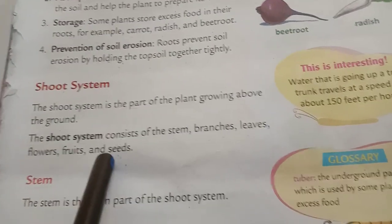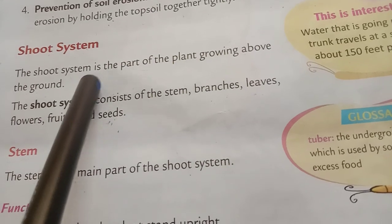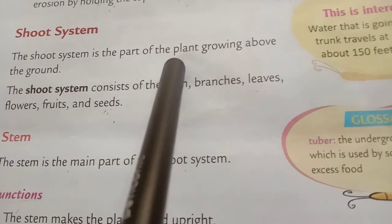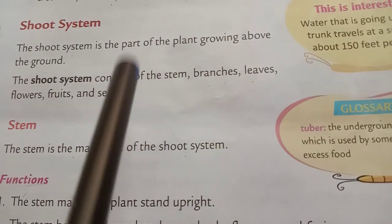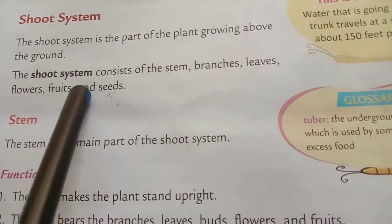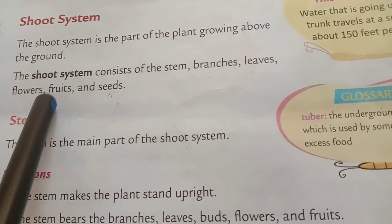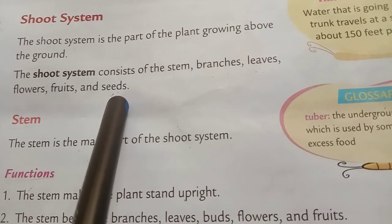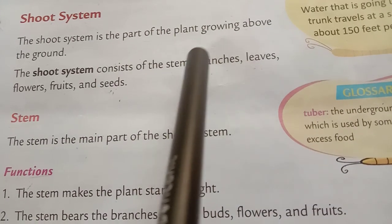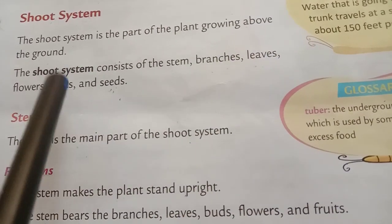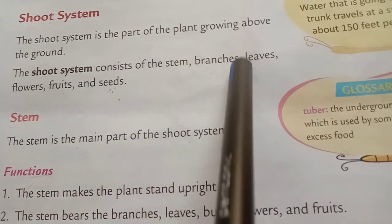Now the next is the shoot system. The shoot system is the part of the plant growing above the ground. The shoot system consists of the stem, branches, leaves, flowers, fruits and seeds.